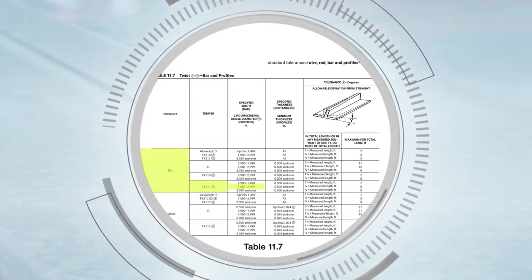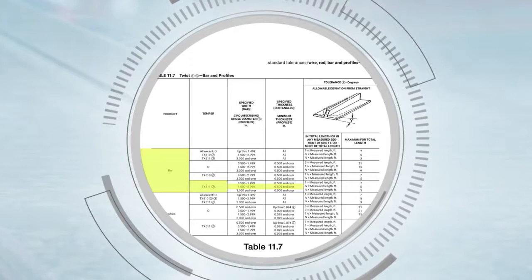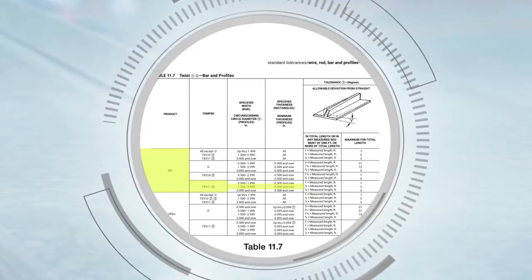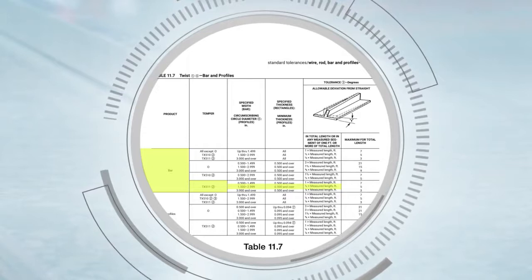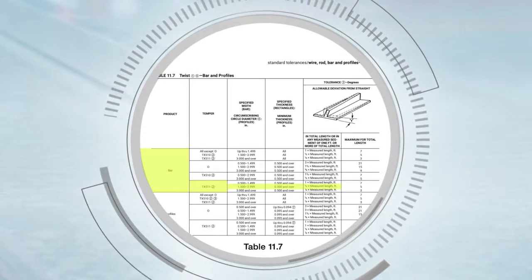As we continue across the table, our minimum thickness will be 0.500 and over. And then we see that the allowable twist tolerance will be half of a degree multiplied by length of the product in feet.